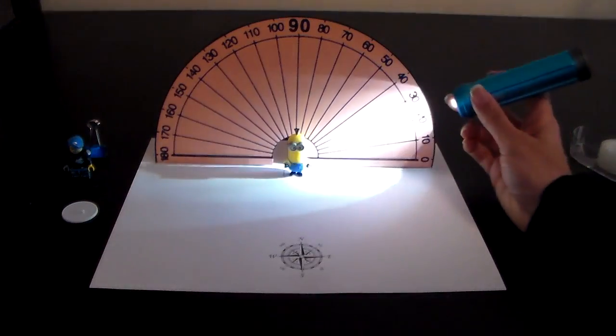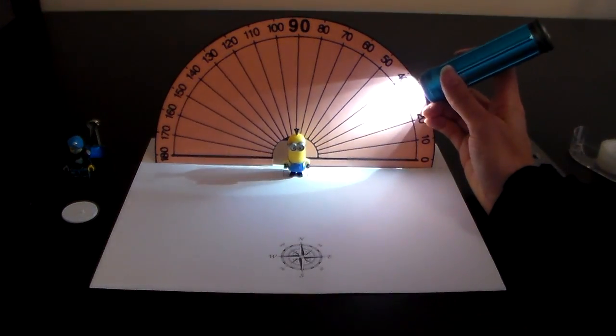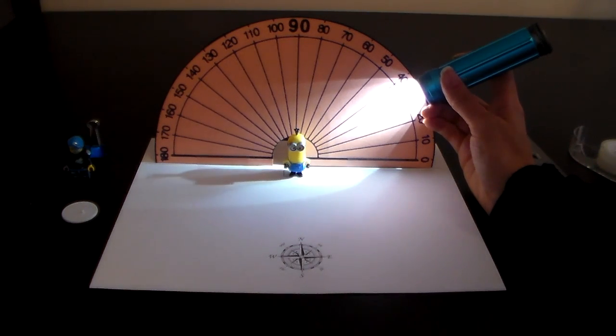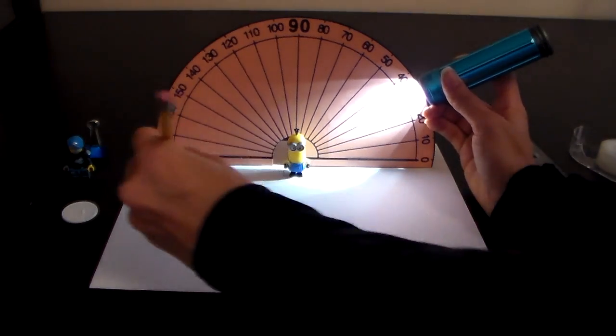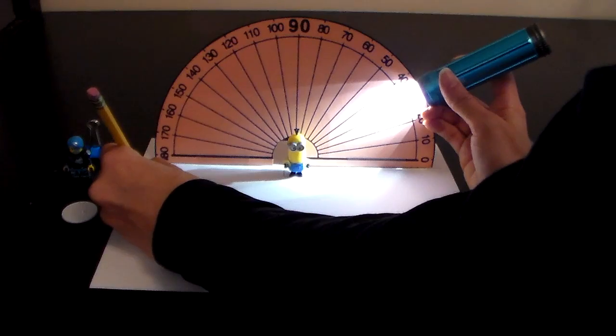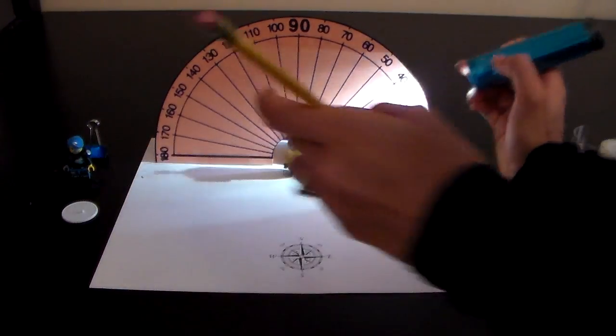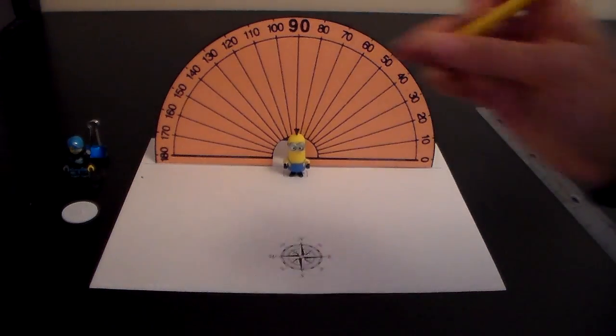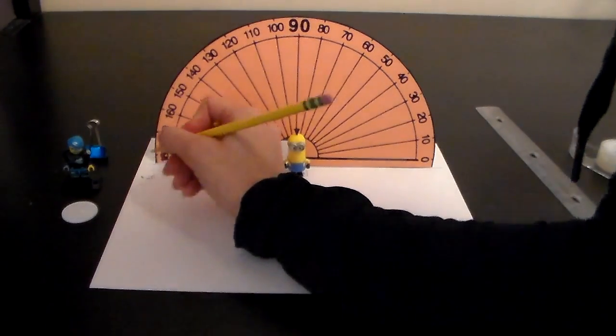After that you will hold the flashlight at the edge of the protractor at a 30 degree angle and shine light onto the figurine or binder clip. Another student should draw a mark at the furthest point that the shadow reaches and then label that mark 30 degrees.